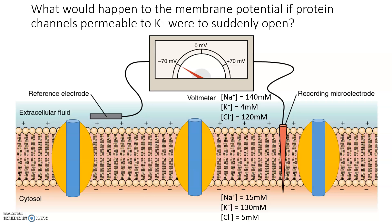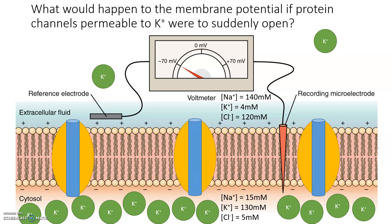If you said the membrane potential will decrease, you got it. When potassium ion channels open, potassium moves down its concentration gradient and rushes out of the cell. This makes the inner membrane more negative as positively charged ions are leaving the cell, therefore decreasing the resting membrane potential.